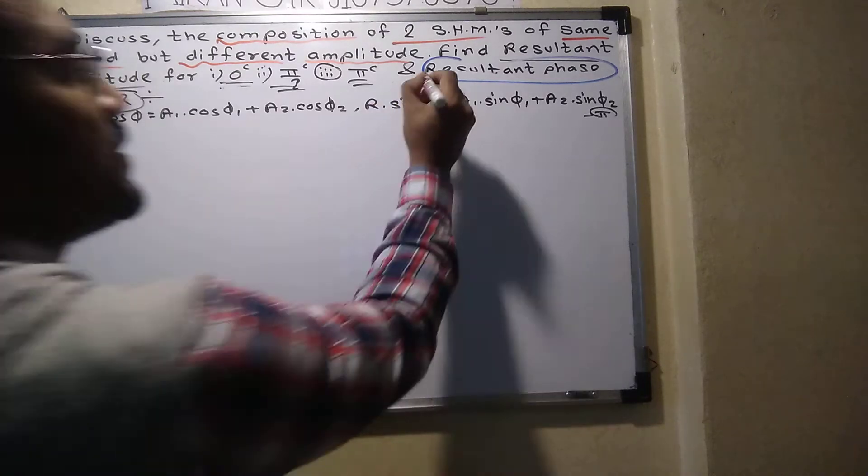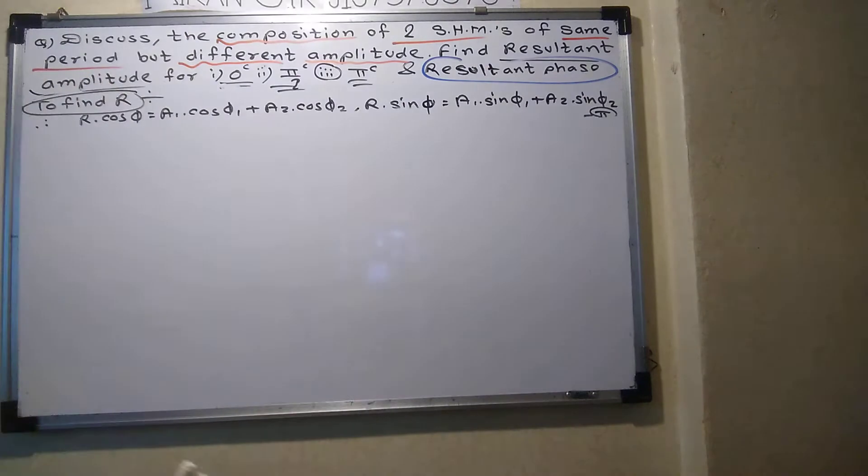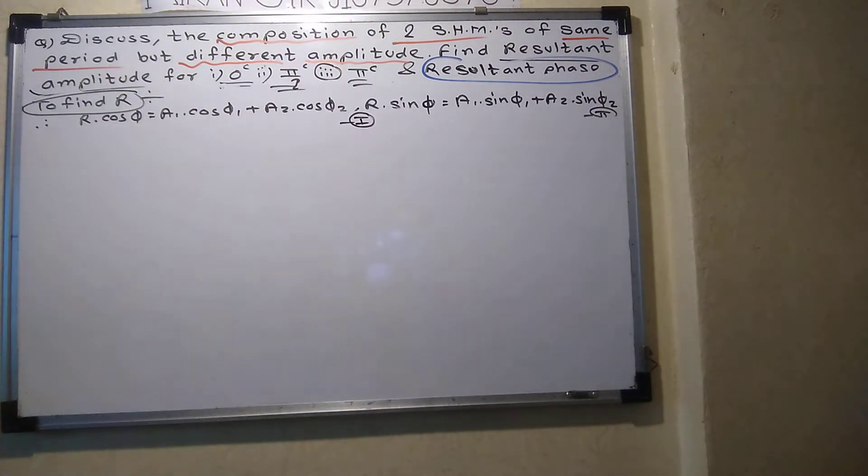We have to find the resultant phase derivation expression. We have to use these two equations, equation number one and equation number two. In this particular equation one and two, I am not going to add square and add to find out R squared, but to find out the resultant phase.